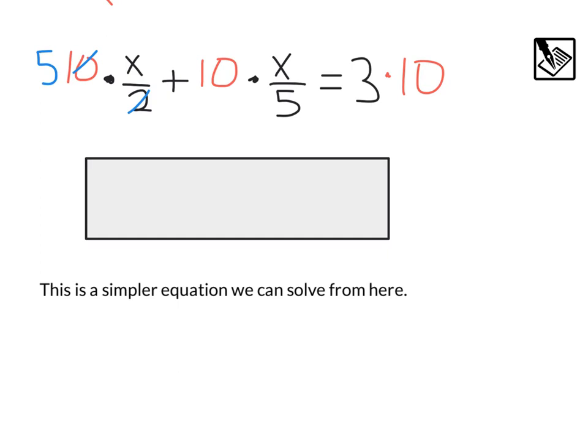This 10 times x over 5, if we do 10 divided by 5, that will leave us with a 2. And then, of course, we have this 3 times 10, which would be 30.